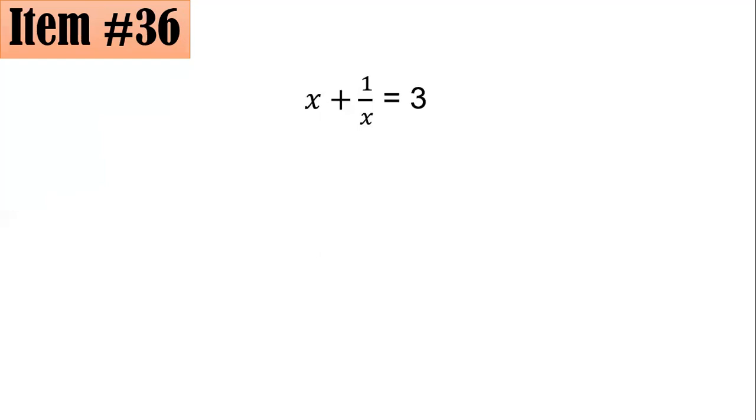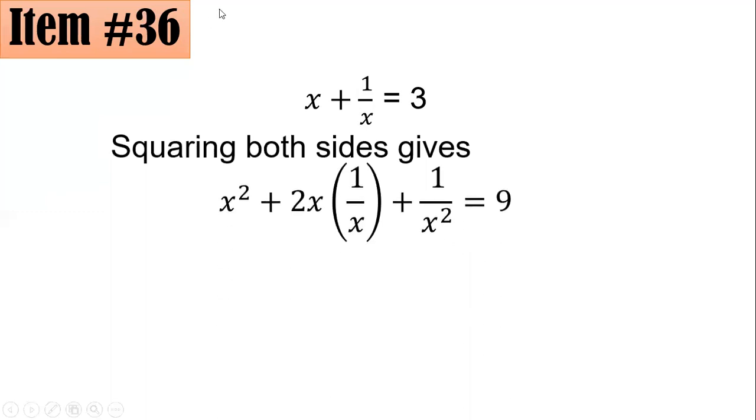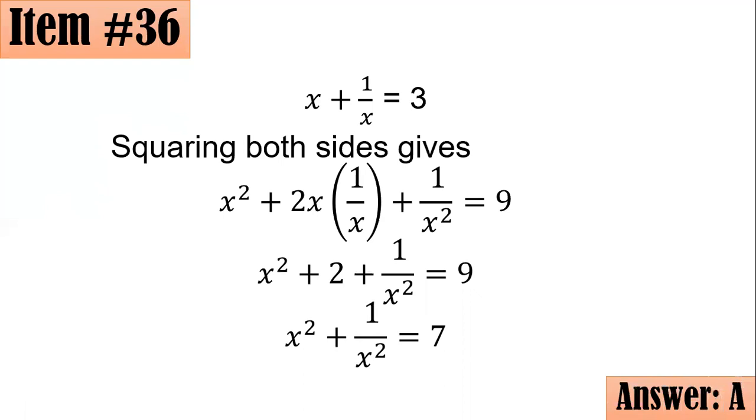Squaring both sides gives you the square of the first term, that's x squared, plus twice the product of the first and second term. You have 2x times 1 over x plus the square of the last term, which is 1 over x squared, equals 9. If you could see in the middle term, x times 1 over x is just 1. So you have 2 times 1, or simply 2. That's why you have x squared plus 2 plus 1 over x squared equals 9. Subtracting both sides by 2 gives the desired expression, which is x squared plus 1 over x squared equals 7. Letter A.